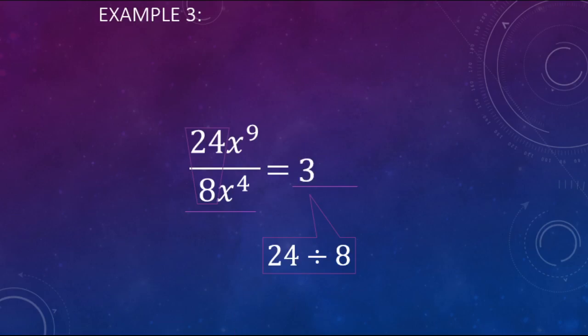After we have the number part of this expression simplified, canceled, reduced, now we'll look at the variable part. That's going to be x to the 9th over x to the 4th.